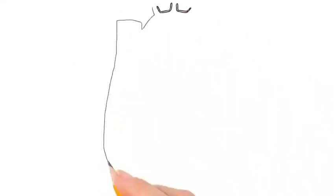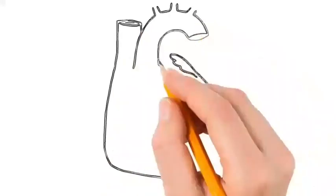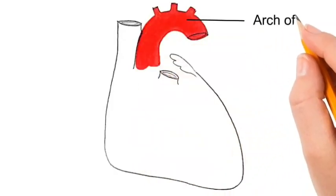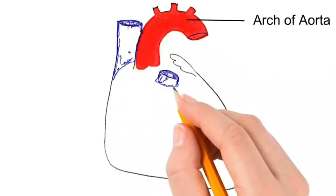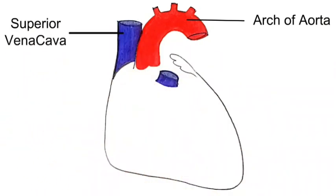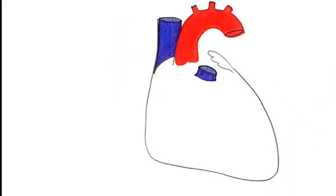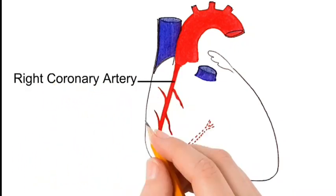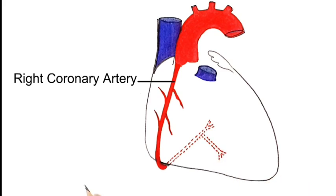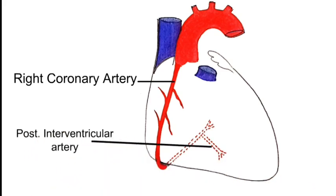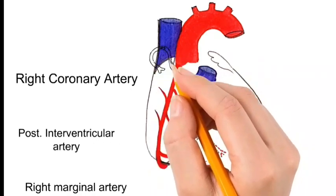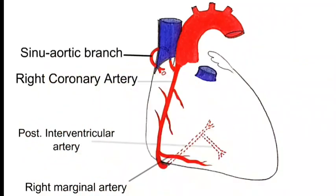For the right coronary artery, we follow the same steps — drawing the outline of the heart showing the arch of aorta, the superior vena cava, and the pulmonary trunk. Then we draw the right coronary artery and its branches: the posterior interventricular artery, the right marginal artery, and the sino-aortic branch.